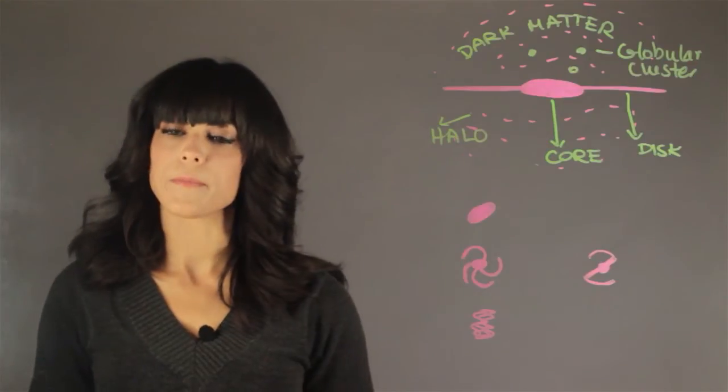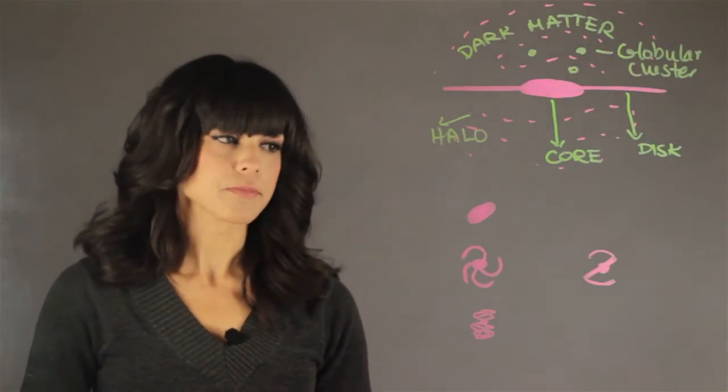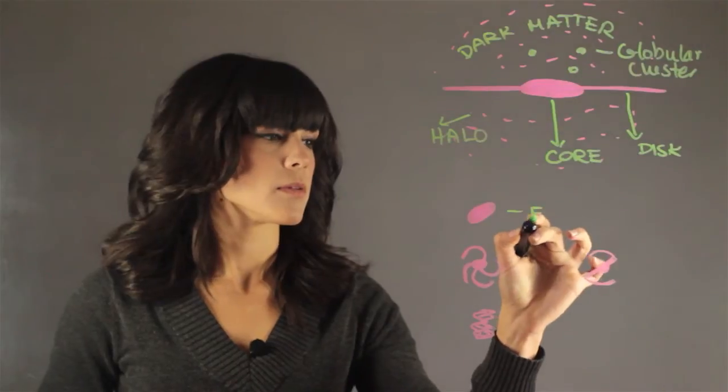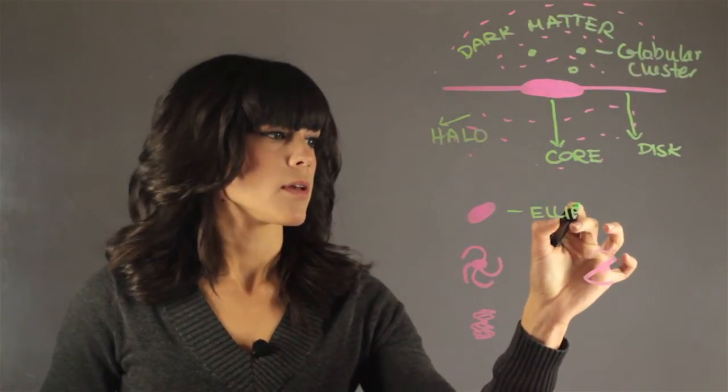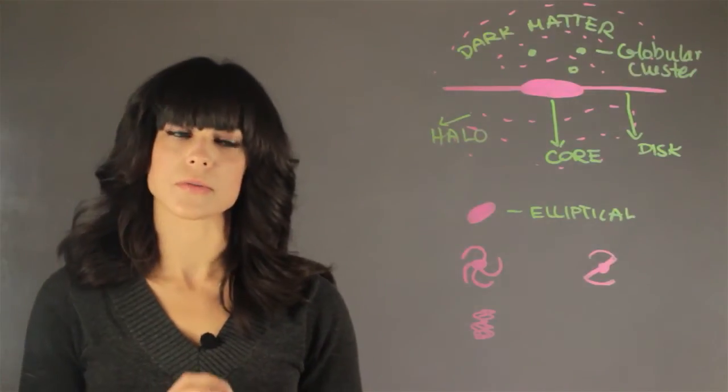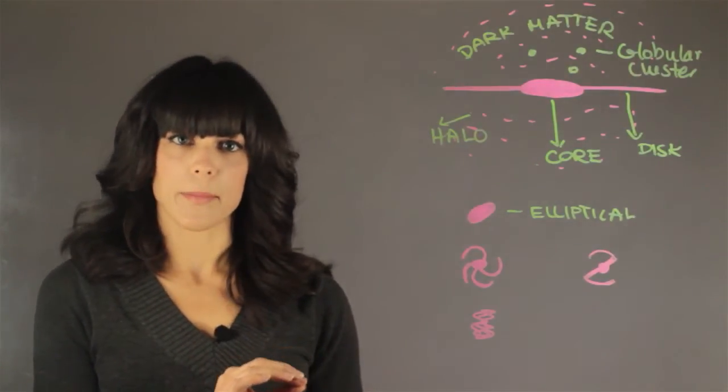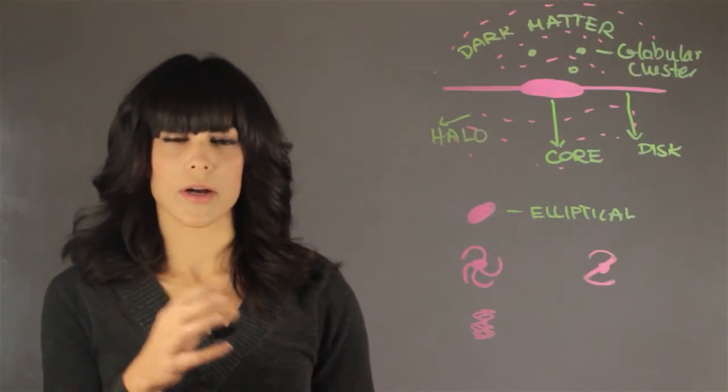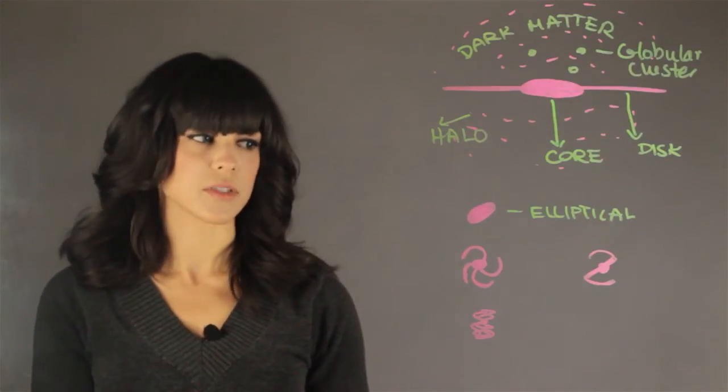Actually galaxies come in a lot of shapes. We have the elliptical. And these are old, and there is very little actual star formation happening. So they tend to be red stars and kind of old and small in size.